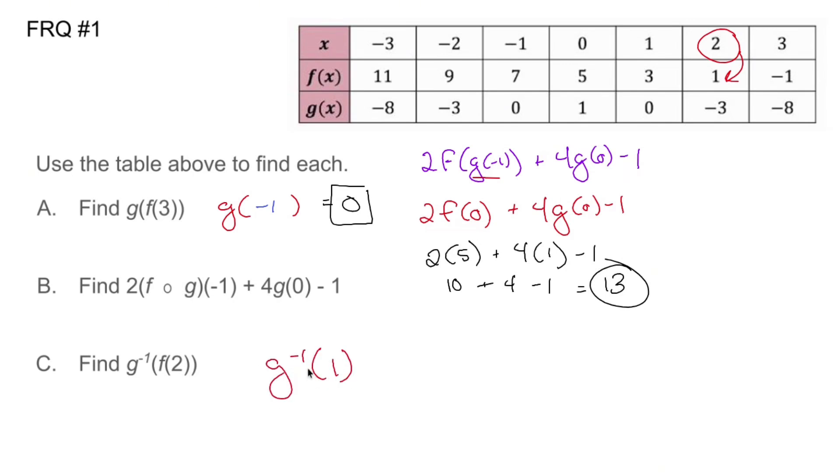Now when you do the g inverse of one, the devil is going to tell you, oh yes, let's go to one. But no, you resist the devil because remember inverses are backwards. So you're swapping the x and the y. That's what you do. So instead of going to the one on the x, you go to the one on the g of x, which gives us zero.